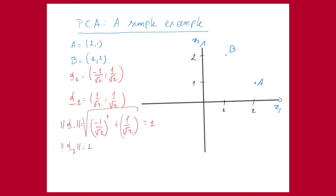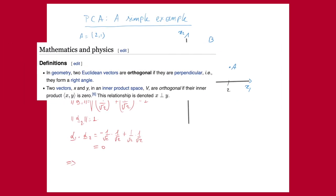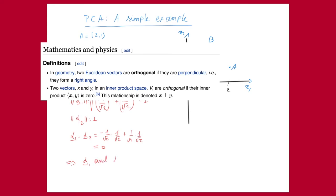We can also show that the inner product of alpha1 and alpha2 is: (-1/√2)(1/√2) + (1/√2)(1/√2), which gives -1/2 + 1/2, equal to 0. So alpha1 and alpha2 are orthogonal.